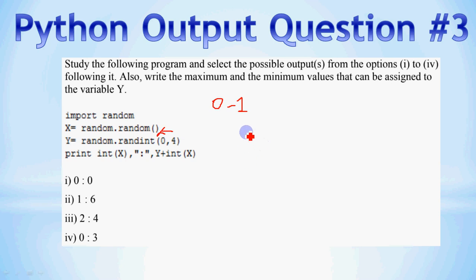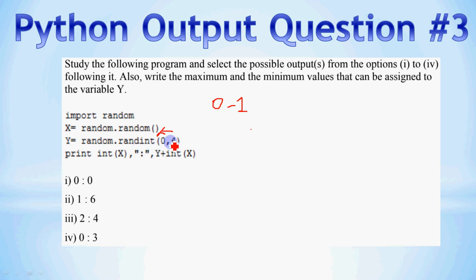So the question says: study the following program and select the possible output from options 1 to 4. Also write the maximum and minimum value that can be assigned to variable y. So for x, the minimum is 0 and maximum is 1. For y, we have random.randint(0, 4).